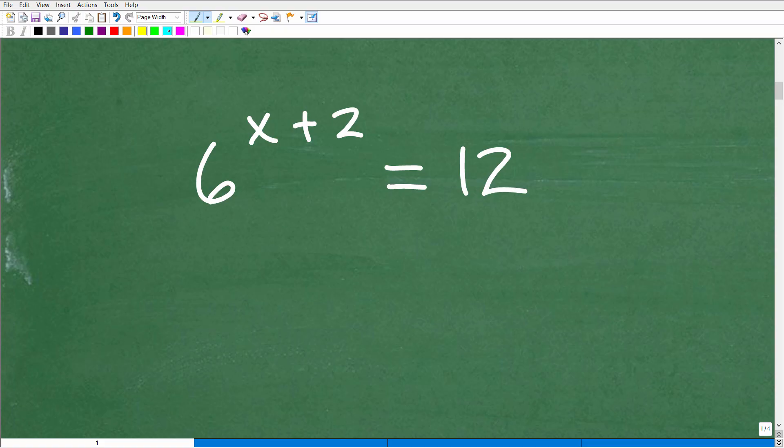Now, why is that? Well, because the variable we're solving for x is in the exponent location of this power.